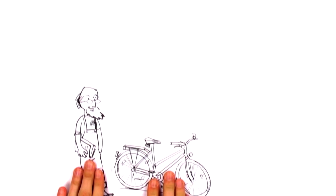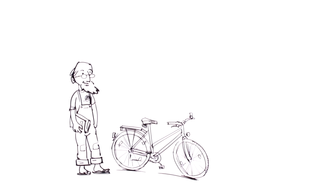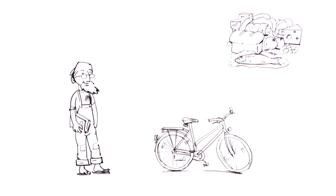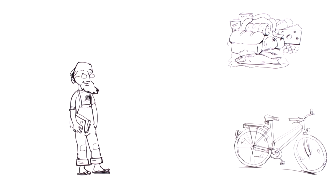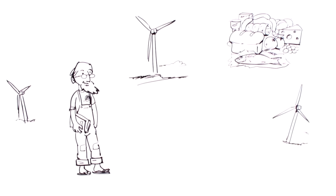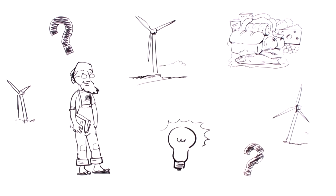This is Peter. Peter is a teacher. He's sure that he leads a sustainable life. He buys organic products at the supermarket, rides to work on a bike, and his lights use green electricity. But is that really sustainable living?